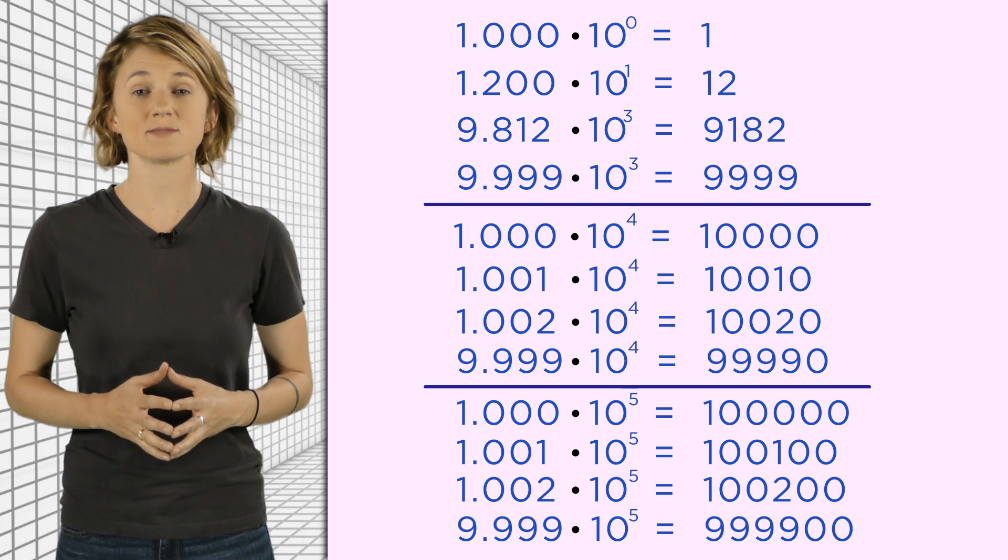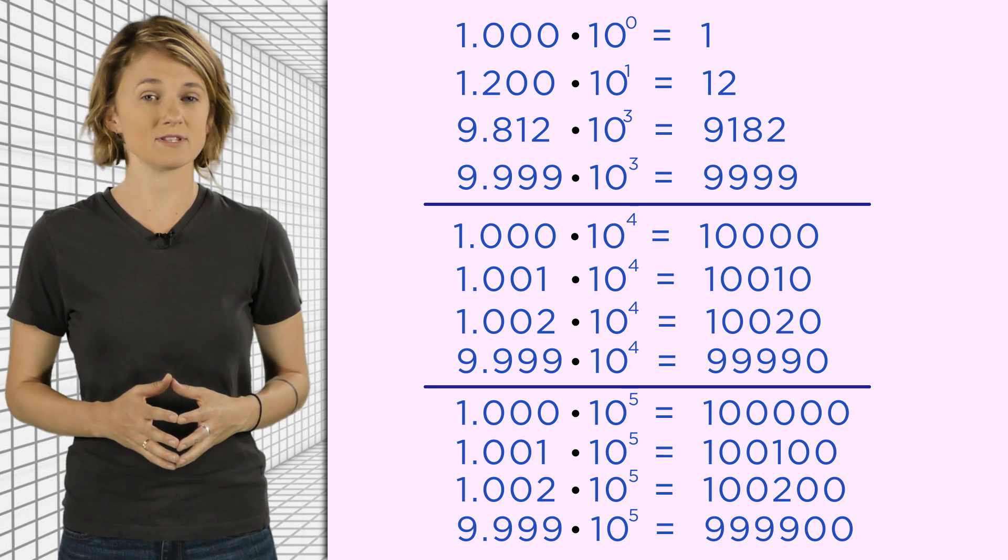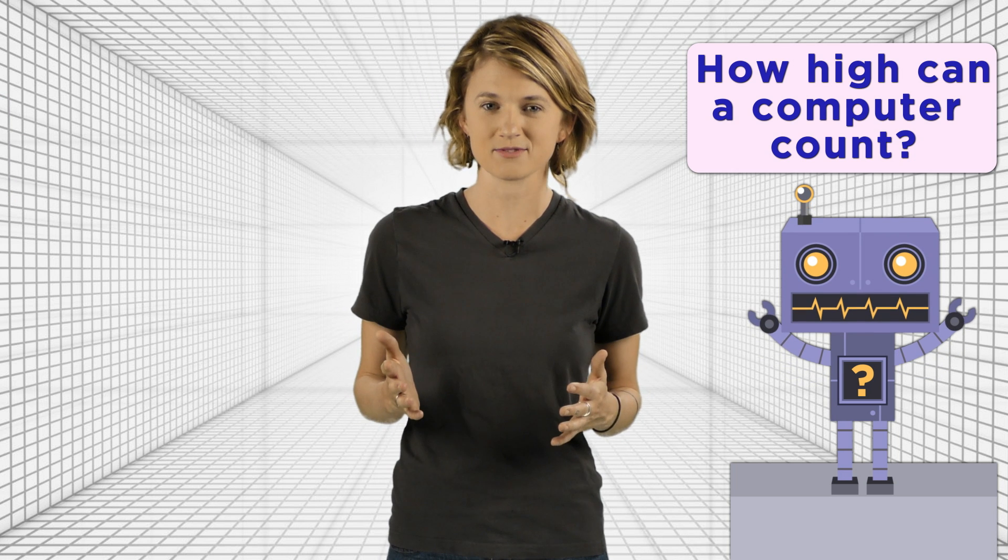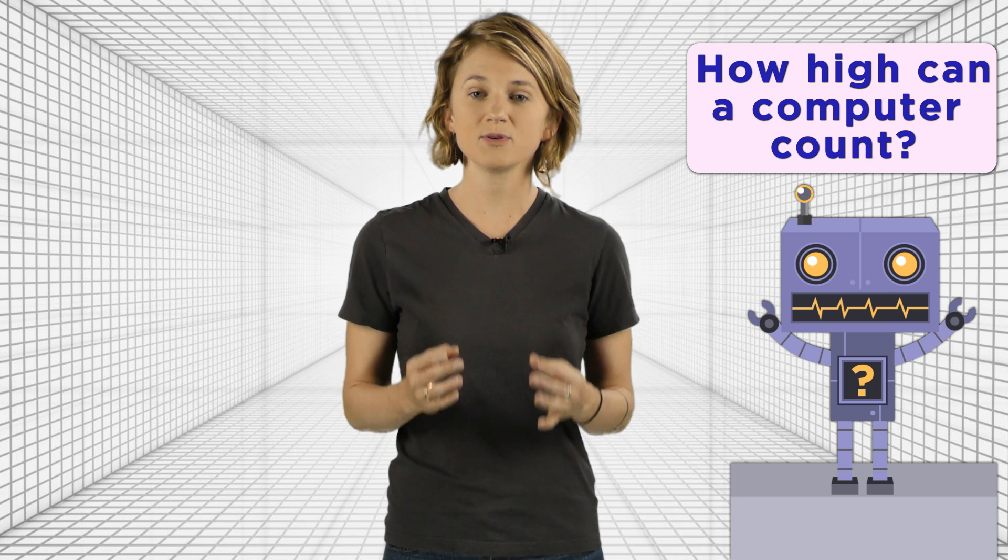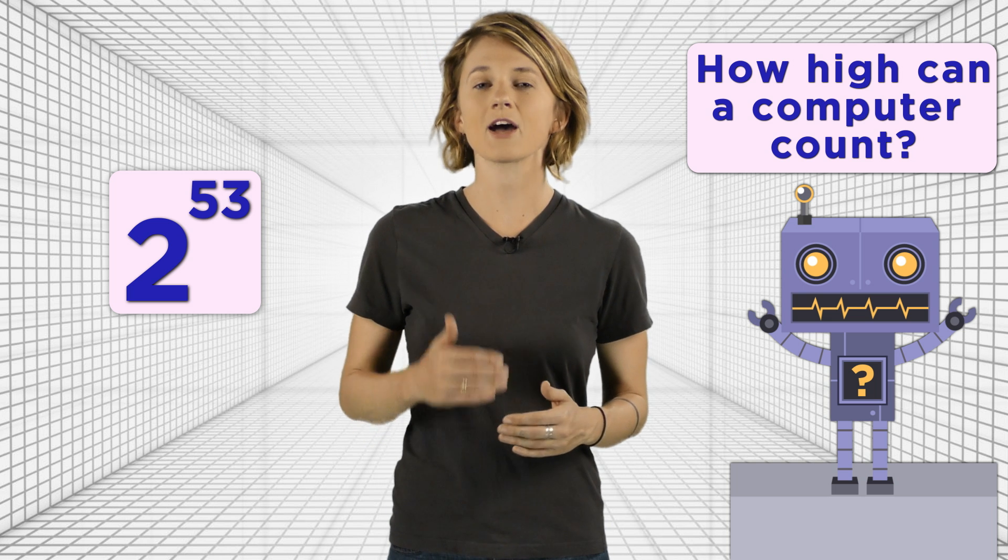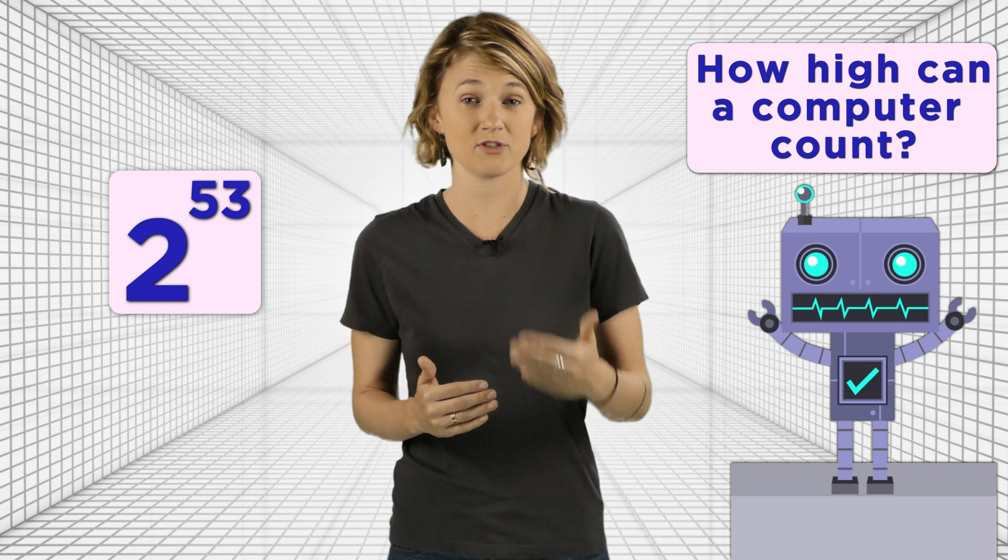Alex Townsend, a professor of mine and a valuable resource for this episode, first got me interested in the subject by asking, how high can a computer count? Applying what we just saw in base 10 to base 2, we can see that computers can represent all integers up to 2 to the 53rd in floating point. That is, a computer can count to 2 to the 53rd.